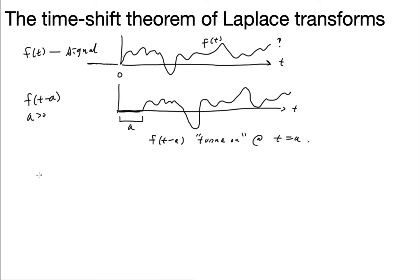Okay. So we want to have a way of dealing with this. So if I know how to take the Laplace transform of f by itself, f of t, and that's equal to capital F of s, the question then is, how do I take the Laplace transform of f of t minus a?